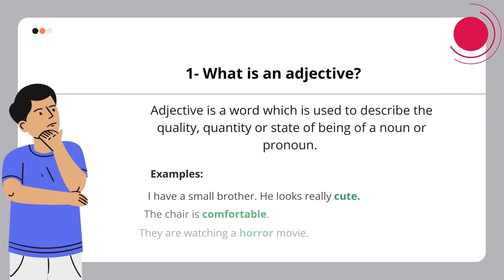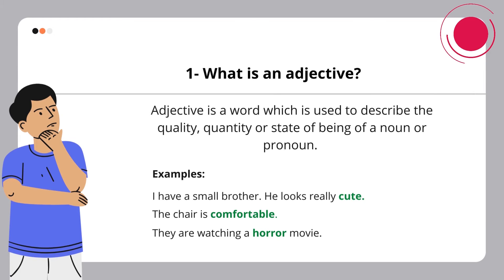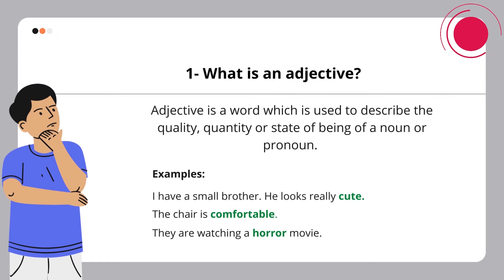What is an adjective? An adjective is a word which is used to describe the quality, quantity, or state of being of a noun or pronoun.